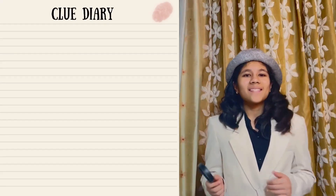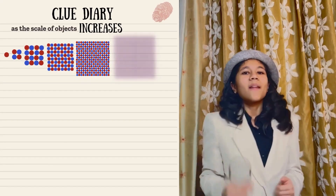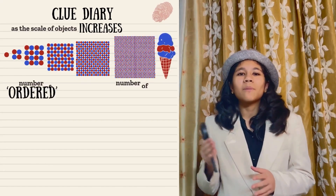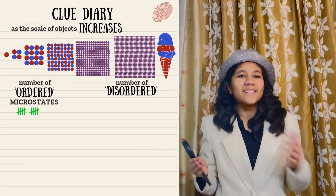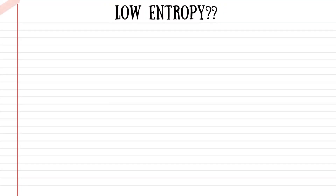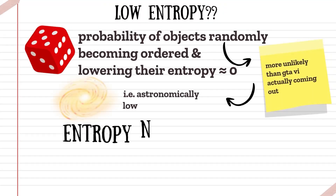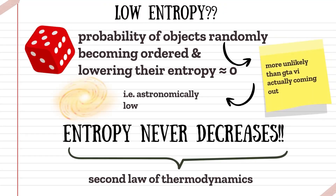Wait — what do you mean always? There must be some probability that the entropy decreases. But as the scale of objects increases, the gap between the number of ordered and disordered microstates widens. So the odds of objects randomly becoming ordered is so astronomically low that entropy just never decreases.